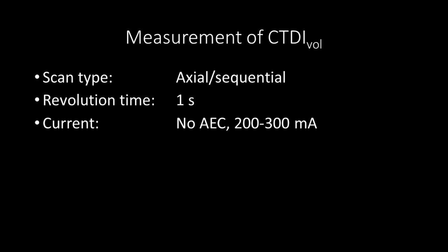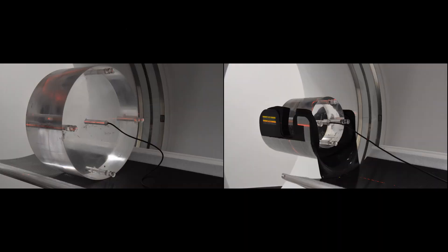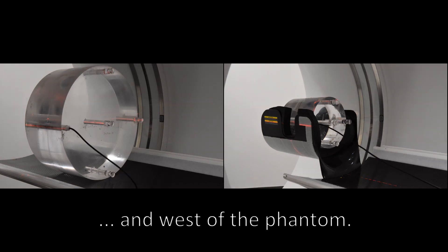To measure the volume CTDI, use the following parameters: Sequential or axial scan type, tube revolution time of 1 second, manual current around 2 or 300 milliamp, tube voltage of 120 kilovolt. Irradiate during 1 single revolution per chamber position and report the primary beam collimation at isocenter. Measure the dose with chamber in the center, north, east, south and west of the phantom.